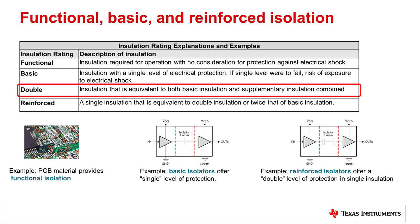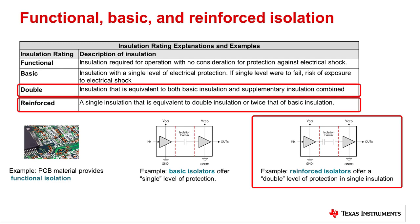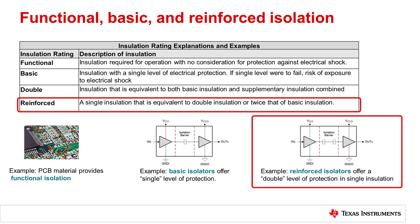This is called double isolation. Circuit designers can use two basic isolation components in series to achieve double isolation, or choose a certified reinforced isolation component. Reinforced isolation components may offer a single isolation barrier, but they must have the proven high voltage electrical strength, reliability, and shock protection equivalent to double isolation, or two levels of basic isolation.